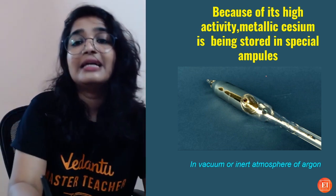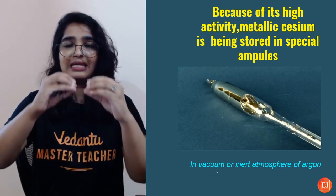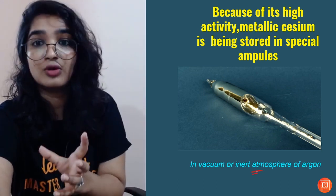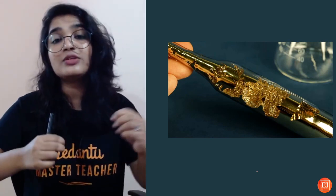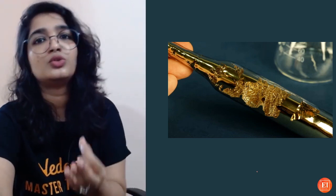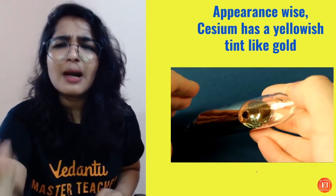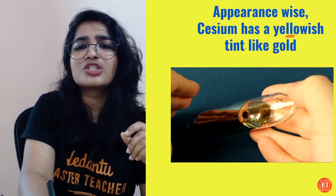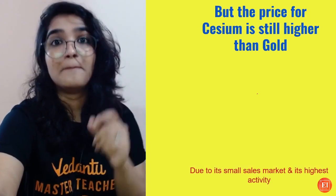Cesium was discovered by Bunsen and Kirchhoff in 1860. As it is highly reactive, it has always been stored in special ampoules, either in vacuum or in an inert atmosphere of argon. We often think sodium and potassium are highly reactive, but cesium is even more so. Appearance-wise, it has a yellowish tint like gold — you can see it here — it looks really nice.